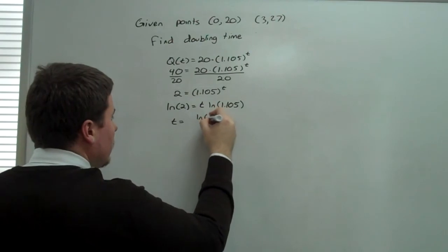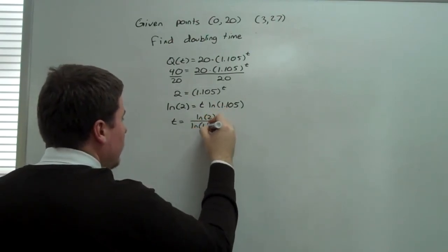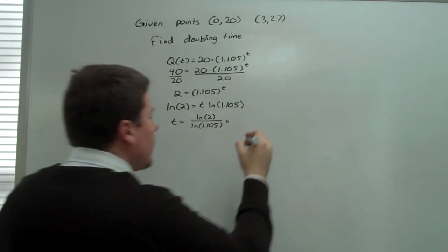So t is going to equal ln of 2 divided by ln of 1.105, which, with some number crunching, is equal to 6.929.